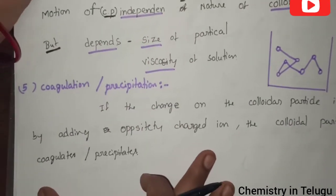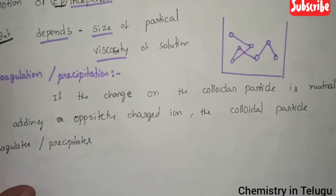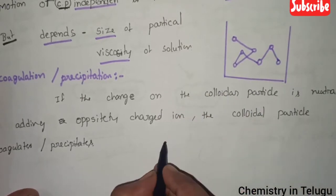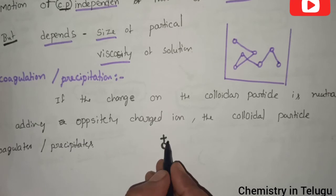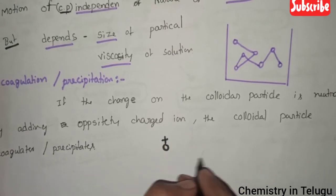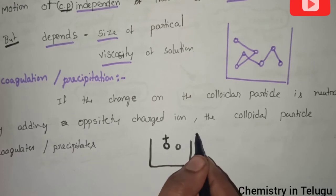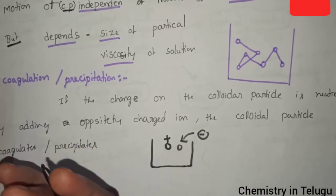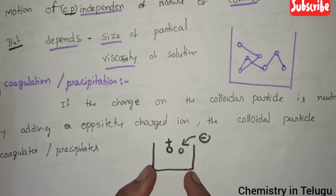The fifth and final point is coagulation or precipitation. This is one of the most important topics. Colloid particles carry a charge — positive or negative. To cause coagulation, we add an electrolyte with the opposite charge. We neutralize the charge on the colloid particles so they settle down — this is coagulation and precipitation.